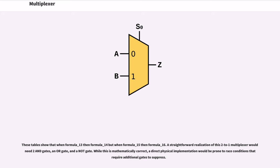A straightforward realization of this 2 to 1 multiplexer would need 2 and gates, a nor gate, and a not gate. While this is mathematically correct, a direct physical implementation would be prone to race conditions that require additional gates to suppress.